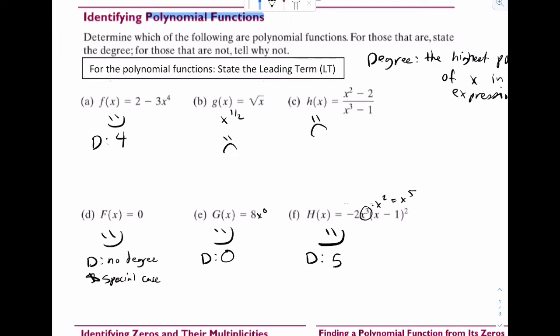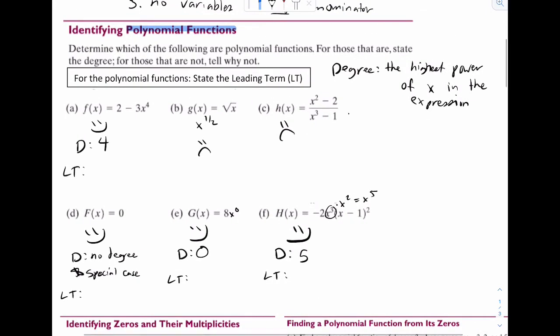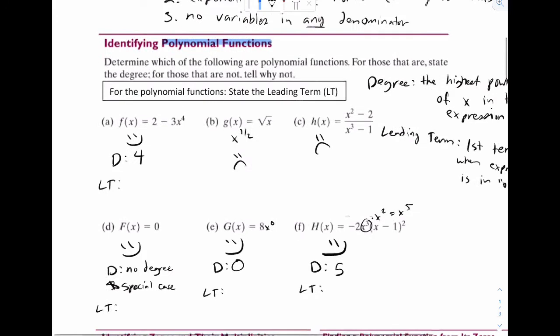Now the last part is going to be leading term, meaning LT. So write LT under everything. So leading term, that's going to be the first term when your expression is in order. And when I say order, order is going to mean the highest power of x first. So for example, A, this thing is not in order. You would want to write it as negative 3x to the fourth plus two. And then right there, that's your leading term, negative 3x to the fourth.